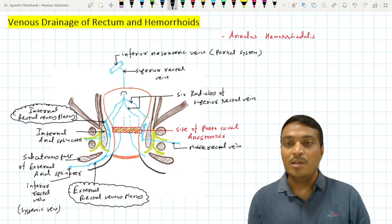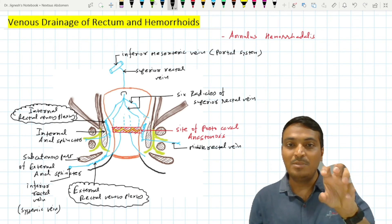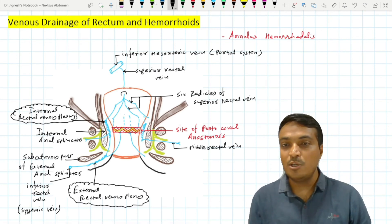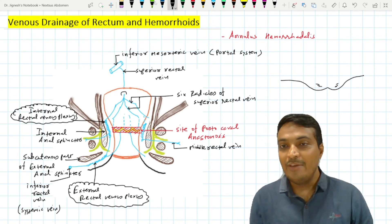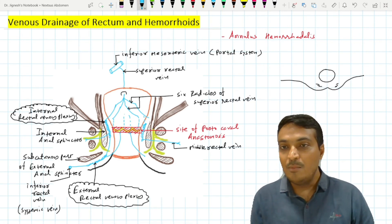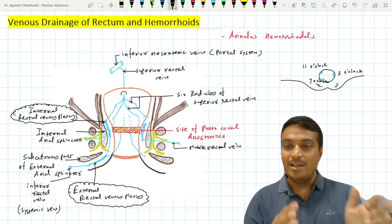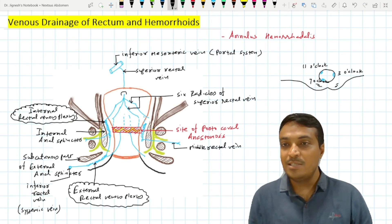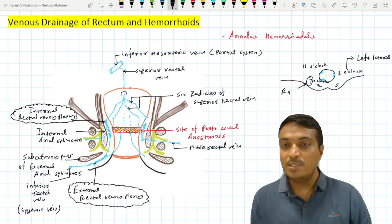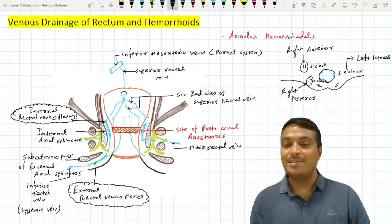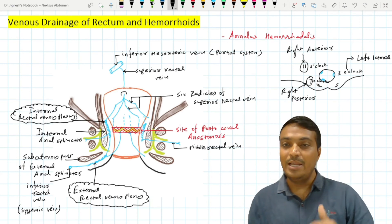In portal hypertension, when examining the interior of the rectum with a proctoscope in the lithotomy position, three enlarged radicals are seen: one at the three o'clock position (left lateral), one at the seven o'clock position (right posterior), and one at the eleven o'clock position (right anterior). These three positions are the most commonly enlarged radicals in internal hemorrhoids.